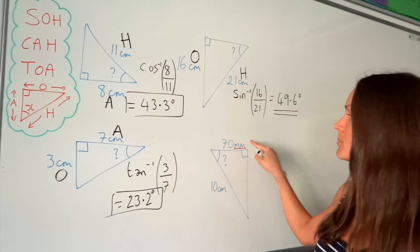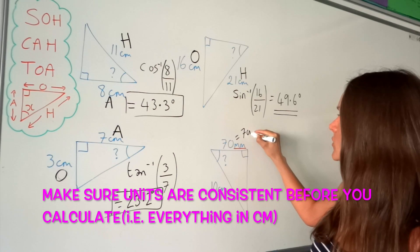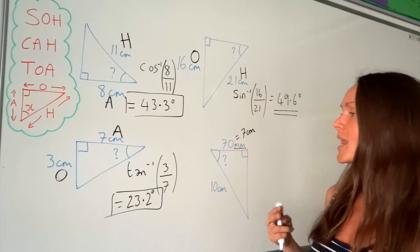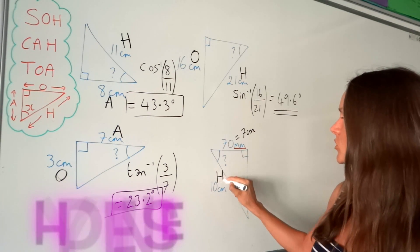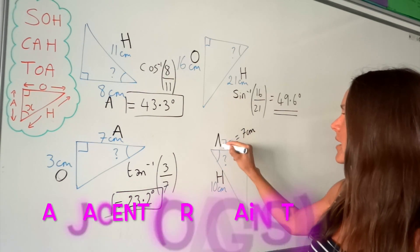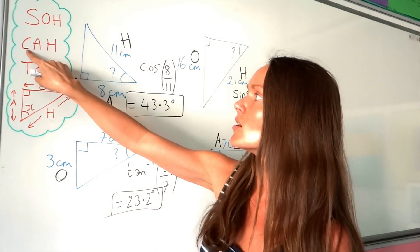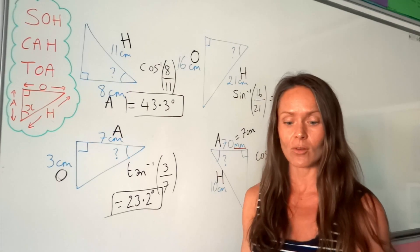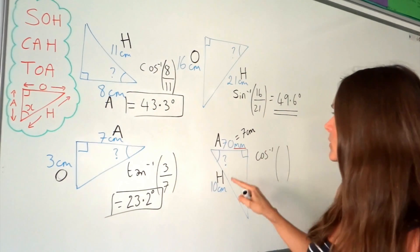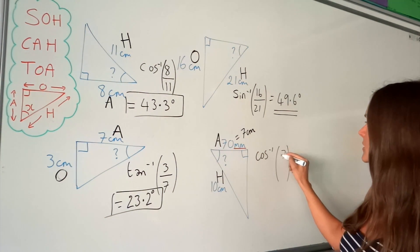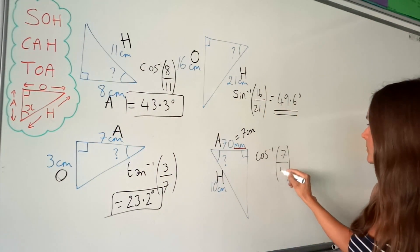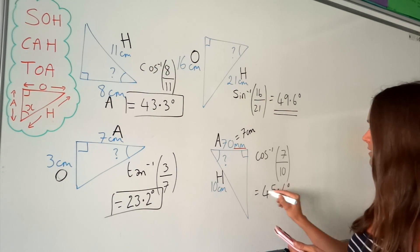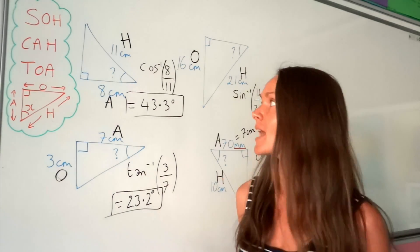In the last one, watch out because the units aren't consistent — one side is in millimeters, so divide by 10 to convert to centimeters. Now label the two sides: the one opposite the right angle is the hypotenuse, and the one against the angle is adjacent. We're using A and H so we use cos. Press shift followed by cos for cos⁻¹, then do adjacent divided by hypotenuse: 7 on top and 10 underneath. Rounding to one decimal place gives 45.6 degrees.